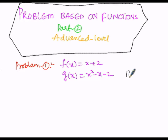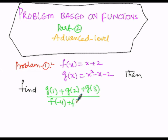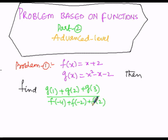We have to find out the value of: g(1) plus g(2) plus g(3), all divided by f(-4) plus f(-2) plus f(2). Solution starts now.